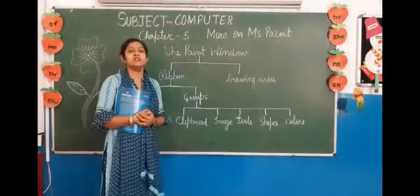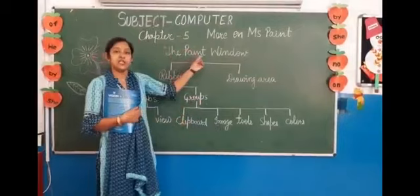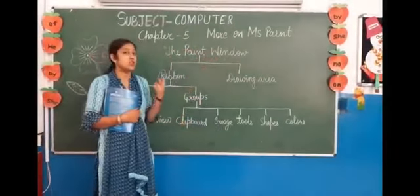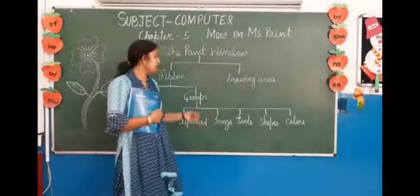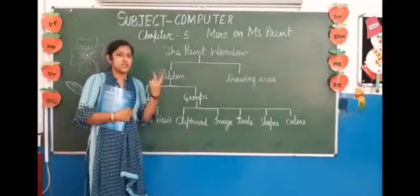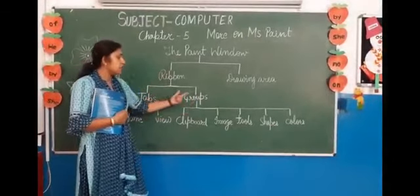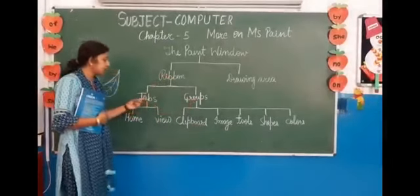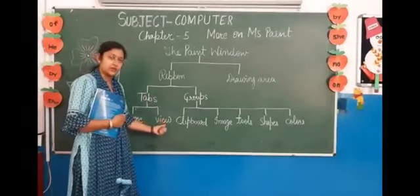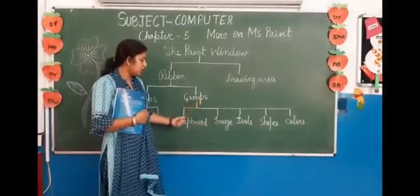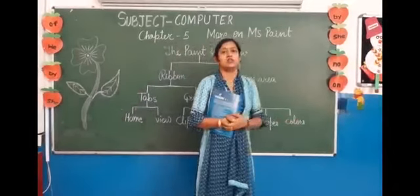Let's revise the important points again. In Part 1 of this chapter, we launched the paint window. The paint window is divided into two parts: first is ribbon and second is drawing area. The ribbon is divided into two parts: first is tabs and second is groups. Tabs are divided into two parts: Home tab and View tab. Groups are divided into clipboard, image, tools, shapes, and colors.